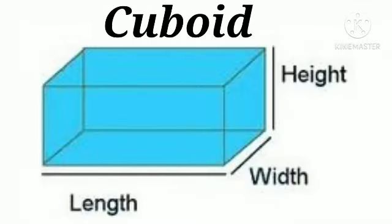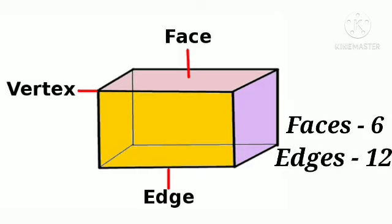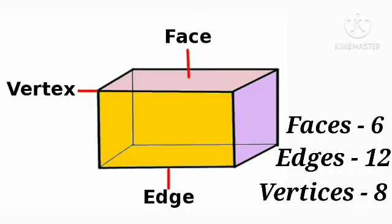Children, this is a cuboid. It is a 3D shape because it has length, width and height. A cuboid has 6 faces, 12 edges and 8 vertices. Its opposite sides are equal. All its faces are rectangular in shape.